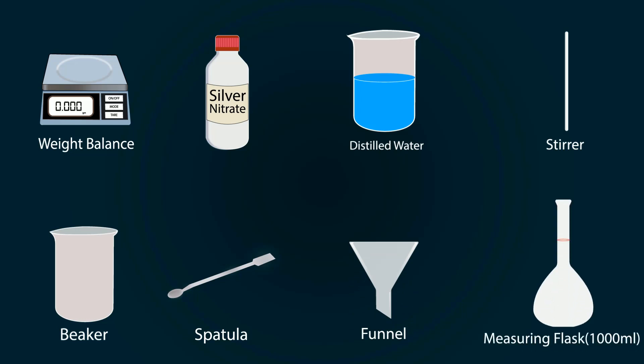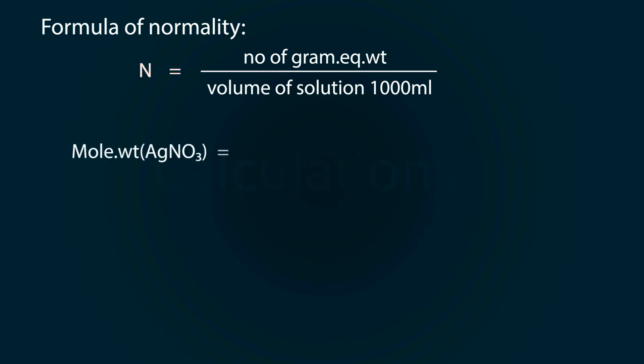And a volumetric flask of 1000 milliliters. For the calculations, we have to find normality, which equals the number of gram equivalent weight divided by volume of solution, which is 1000 milliliters.